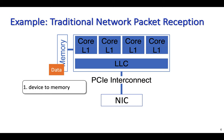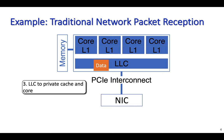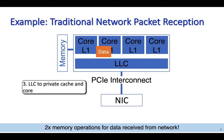Then the CPU fetches data from the memory to either process the packets in the network software stack or process the payload in the network application. The data is read by a core from the LLC to the private caches to be processed. As you can see, for each data unit received from the network, this system consumes twice as much bandwidth on the memory channel — once when the data is written to memory by DMA, and again when the data is read from memory to be processed in the CPU.